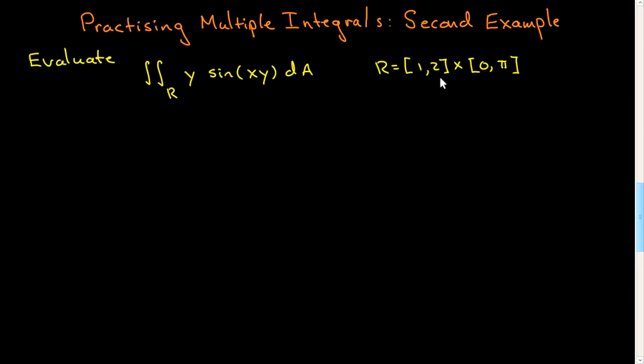So x is between 1 and 2 and y is between 0 and pi. Unlike the first example, you now have a choice as to how to nest the integrals. You're going to evaluate this by repeated integration, and it's your choice as to how to nest those integrals.